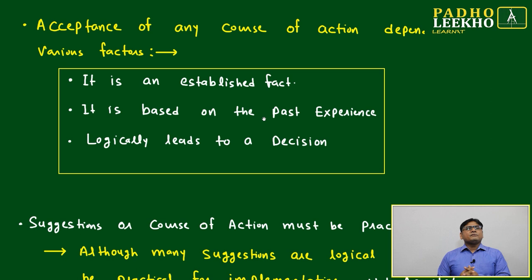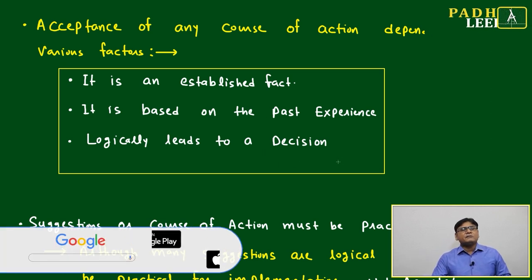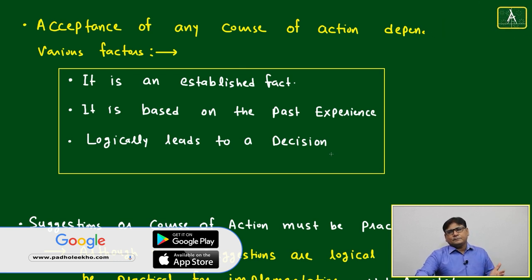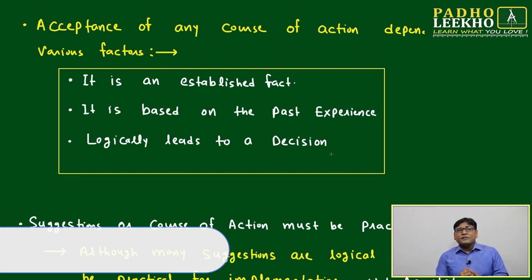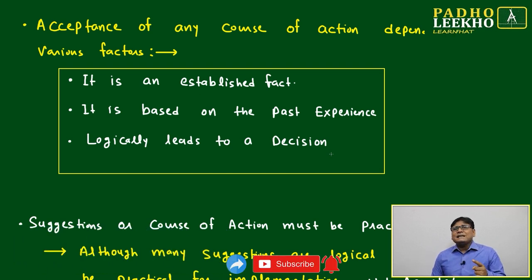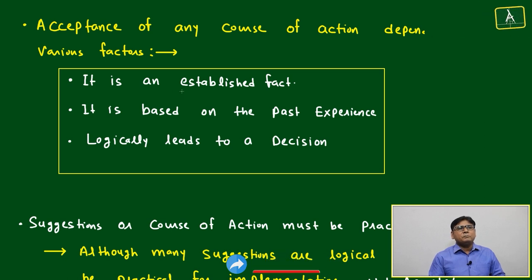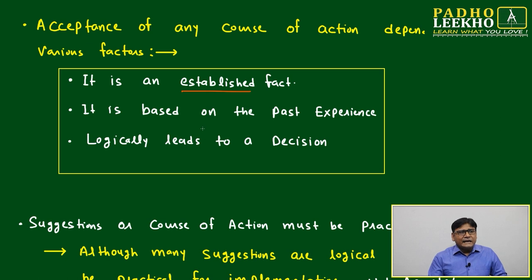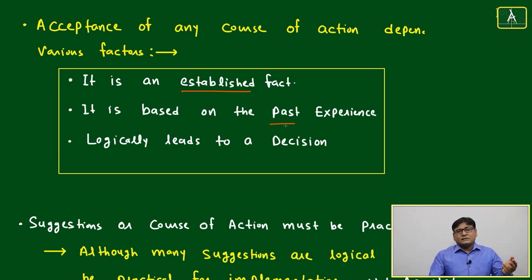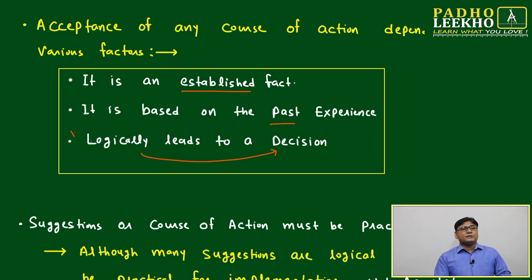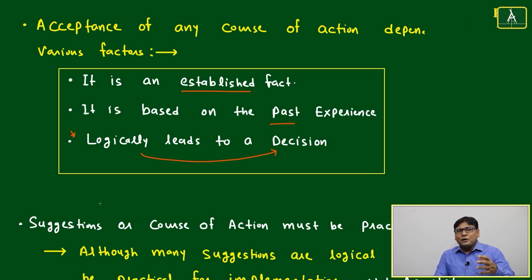The acceptance of any course of action depends on various factors. We will accept only what is an established fact — something universally or socially acceptable by a large group of people. Second, it must be based on past experience; if good results came from a course of action earlier, we can accept it again. Third, it must logically lead to the decision. If it is not logically solving the problem, we should not accept it.